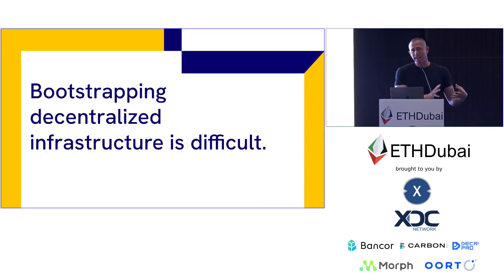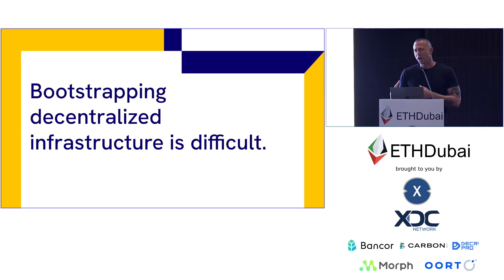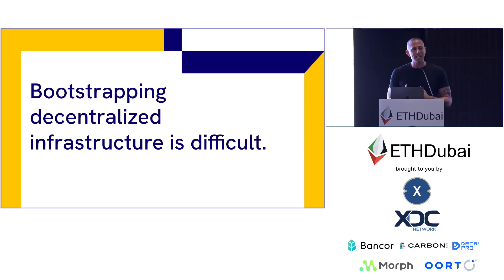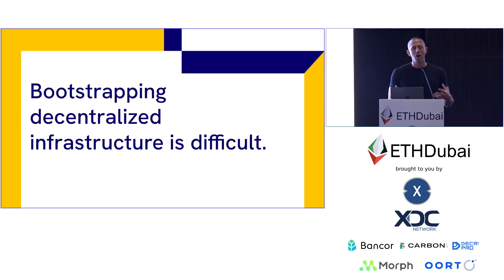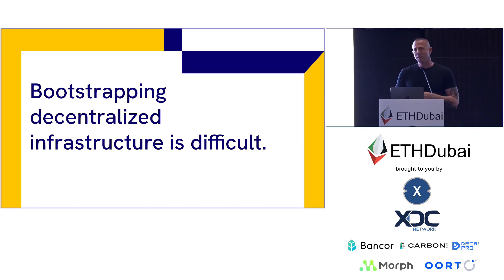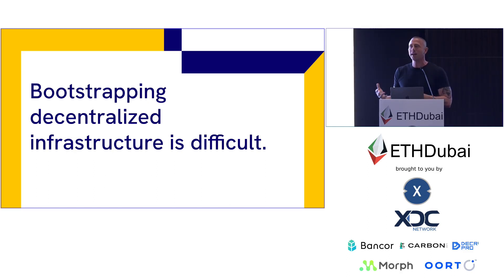The general problem Eigenlayer is hoping to solve is that it is hard to bootstrap decentralized infrastructure from scratch — and you might even say it's hard to build any type of reliable infrastructure and software period. If you've ever used AWS, you might have noticed that US East 1, which powers a large majority of the internet, goes down every year, taking everything with it — not because you wrote bad code, but because the underlying infrastructure went down.